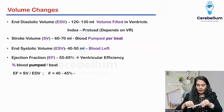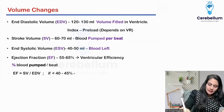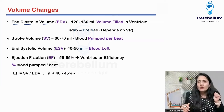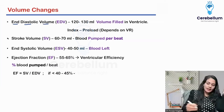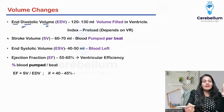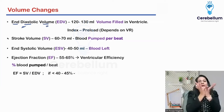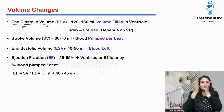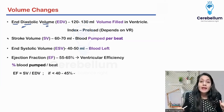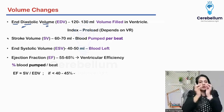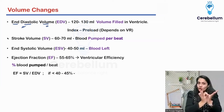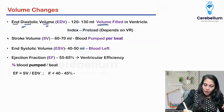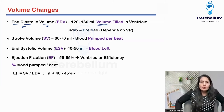Let's discuss some volumes. See over here — end diastolic volume. What do you mean by end diastolic volume? At the end of the diastole, whatever amount of blood — whatever amount of volume — is there inside my ventricles, I'm going to call it end diastolic volume. Diastole means relaxation. So during ventricular relaxation, whatever volume was there — that is the EDV.